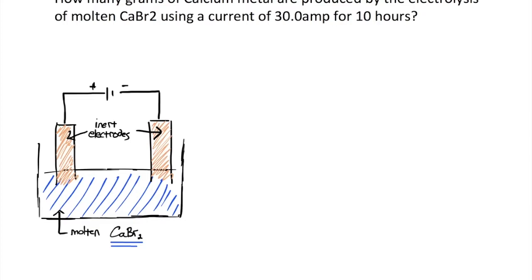How many grams of calcium metal are produced by the electrolysis of molten CaBr2, calcium bromide, using a current of 30 amps for 10 hours? We're describing the operation of an electrolytic cell here and we'd like to extract that calcium metal from the calcium bromide salt.